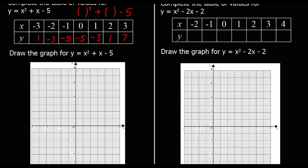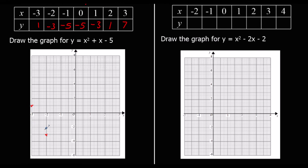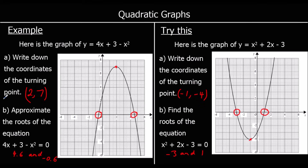Now we can plot these coordinates. We've got: (-3, 1), (-2, -3), (-1, -5), (0, -5), (1, -3), (2, 1), and (3, 7). We're going to join these up with a smooth curve — a nice U shape like the ones we had drawn for us.